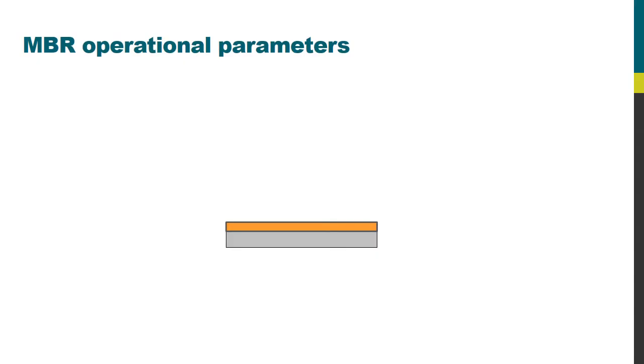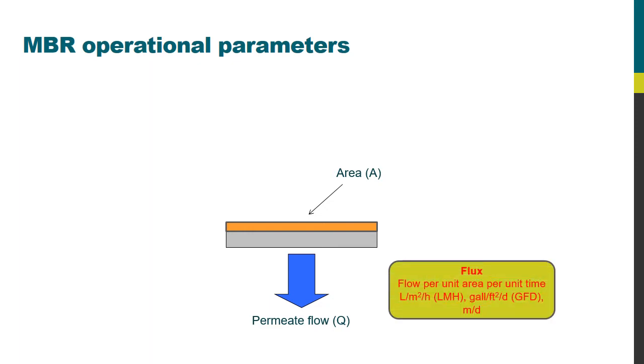So here we have a membrane with the surface shown in orange and that has area A, and water flows through that membrane at a flow of Q. Now the most fundamental parameter in any membrane process is the flux, which is the ratio of the flow to the area.